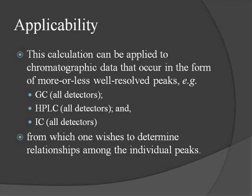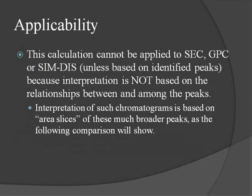The area percent calculation can be applied to any kind of chromatographic data that occur in the form of more or less well-resolved peaks, such as gas chromatography using any kind of detector you can imagine, high pressure liquid chromatography similarly applied to all detectors, and ion chromatography in which the individual components are not identified. We don't apply area percent calculations or normalized area percent calculations to size exclusion or gel permeation or simulated distillation chromatograms unless the simulated distillation is based on identified peaks. Because in the case of size exclusion or gel permeation, the interpretation isn't based on relationships between fairly well-resolved peaks. The interpretation of size exclusion chromatograms is based on area slices of much broader peaks, as we'll show you.